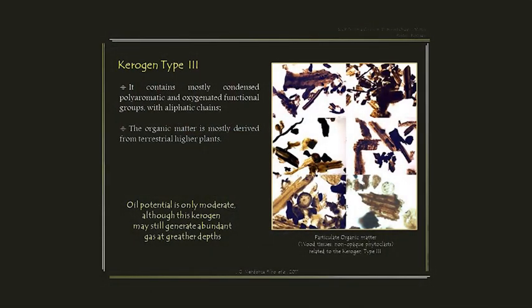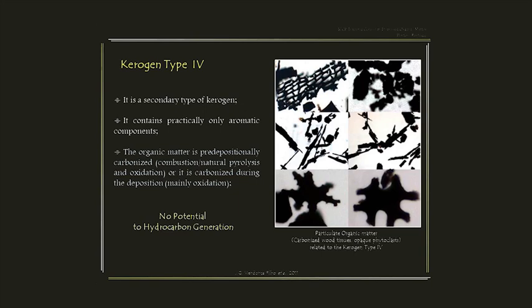O querogênio Tipo 3 contém muitos componentes poliaromáticos condensados e grupos funcionais oxigenados, com poucas cadeias alifáticas. A matéria orgânica é principalmente derivada dos vegetais superiores terrestres — fragmentos ricos em celulose e lignina. Tem baixo potencial para gerar óleo, mas potencial para gerar gás. O querogênio Tipo 4 — secundário — contém praticamente só componentes aromáticos por processos de carbonização pré-deposicionais, como incêndios de florestas onde as copas das árvores são pirolisadas em vez de entrarem em combustão, produzindo material carbonizado sem qualquer potencial para gerar hidrocarbonetos.